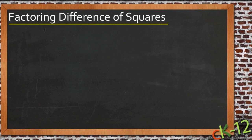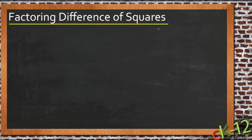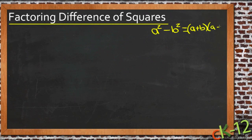All the exercise videos in this factoring difference of squares lesson had just a single variable — all just x or just y. We're going to do a couple more examples here, still applying the same rules where you have something squared minus something else squared, and it factors as the square root plus the square root times the square root minus the square root, only using a situation where we have two different variables.